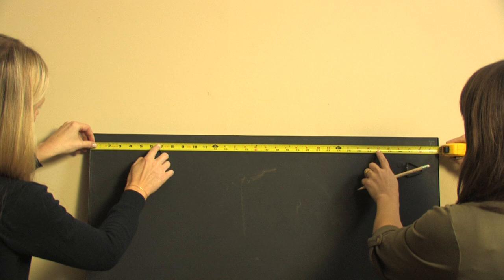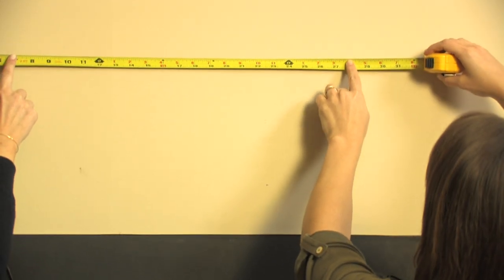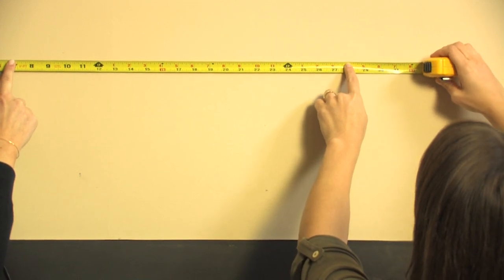Measure the distance between the center of both D-rings on the back of your mirror, making insertion marks for each D-ring at the level you previously determined was best.